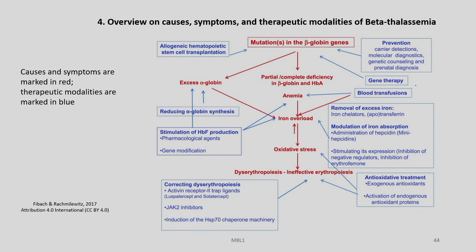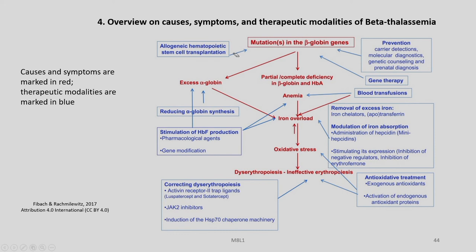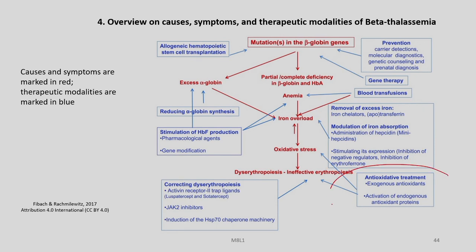We also have options for gene therapy, and whenever there is anemia we go for blood transfusions. We have already shown allogeneic hematopoietic stem cell transplantation, and in certain cases wherever there is excess alpha globin we go for reducing alpha globin synthesis. If there is iron overload we emphasize removal of excess iron using iron chelators, apotransferrin, modulation of iron absorption, and anti-oxidative treatments using exogenous antioxidants or activation of endogenous antioxidant proteins.